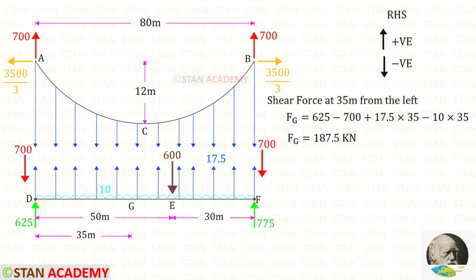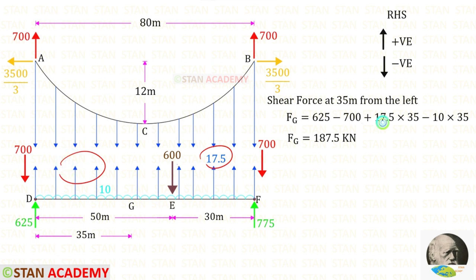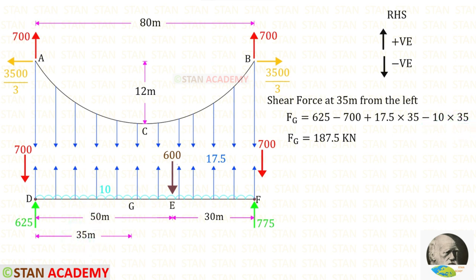Now let us find the shear force at 35 meter from the left side. Let us call the point G. The reaction is acting upwards so it will be positive. The downward load is negative. The equivalent uniformly distributed load is acting upwards and is positive over the distance of 35, while the actual UDL is acting downwards and is negative over 35 meters. Finally, for the shear force we will get 187.5 kN.